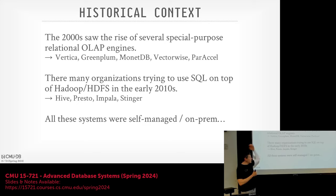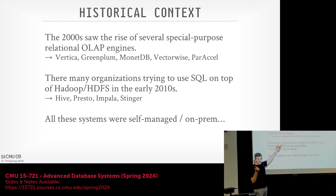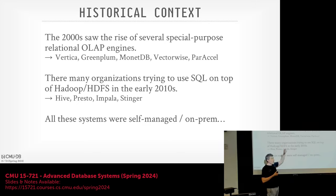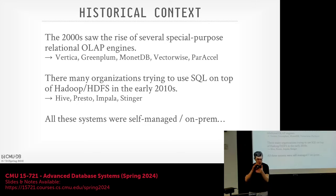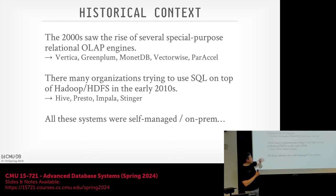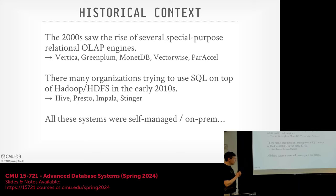Of all these systems, Vertica and Greenplum are probably the two biggest ones. MonetDB we've talked about, and we'll discuss it again with DuckDB — the earlier version of DuckDB was MonetDB Lite, a fork of that system. Vectorwise we covered early in the semester. ParAccel we'll see again when we talk about Redshift, because Redshift wasn't written from scratch — Amazon bought a license to the ParAccel source code.